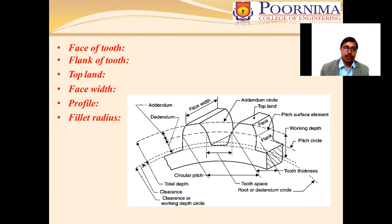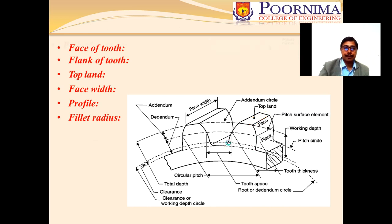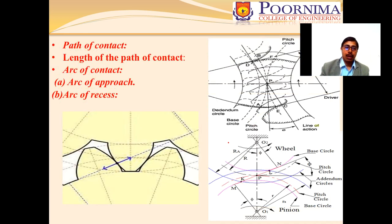The face of the tooth is the surface above the pitch circle, and the flank is below it. The top land is the top surface of the tooth. The face width is the width of the tooth measured axially. The fillet radius is the rounded radius at the base of the tooth, and the tooth profile is also defined here.